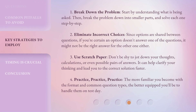One: break down the problem. Start by understanding what is being asked, then break the problem down into smaller parts and solve each one step by step. Two: eliminate incorrect choices. Since options are shared between questions, if you're certain an option doesn't answer one of the questions, it might not be the right answer for the other one either.